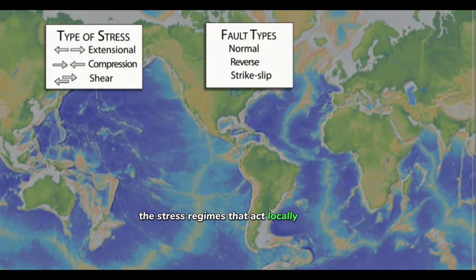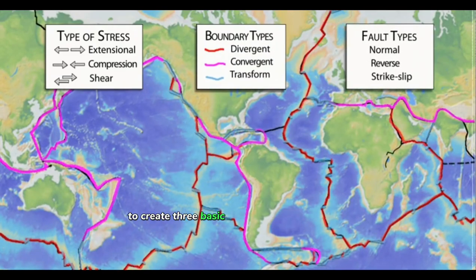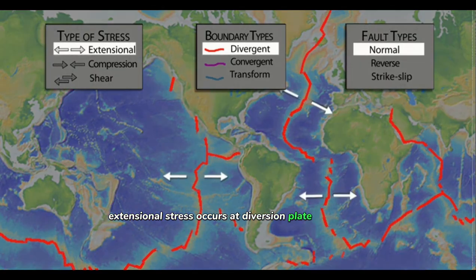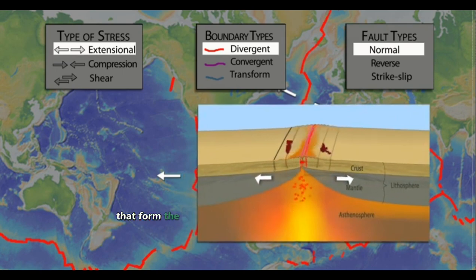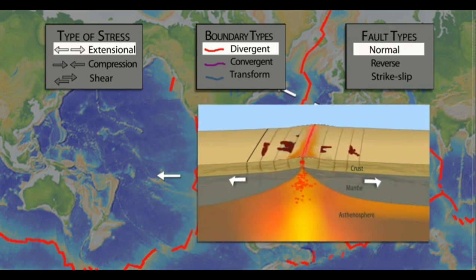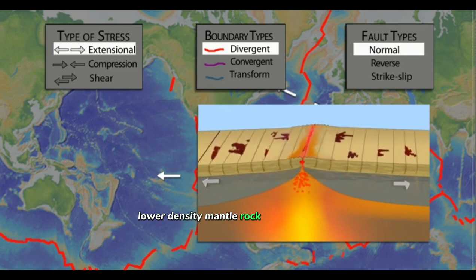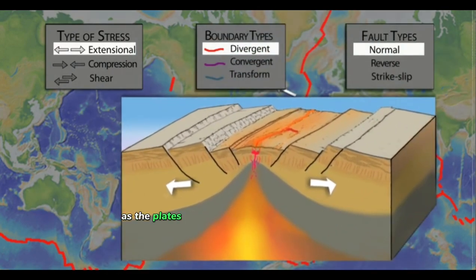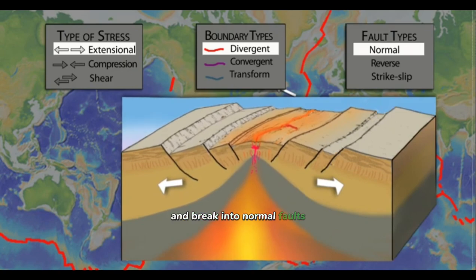The stress regimes that act locally on faults also act at larger regional scales to create three basic types of plate boundaries. Extensional stress occurs at divergent plate boundaries where two plates move away from each other. Examples include oceanic spreading ridges that form the longest mountain ranges in the world. As the plates pull apart, hot and therefore lower-density mantle rock rises to support the 3,000 to 9,000 foot high spreading ridges. As the plates move away from the ridge, they cool, become brittle, and break into normal faults.